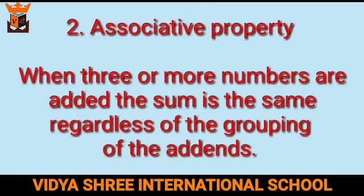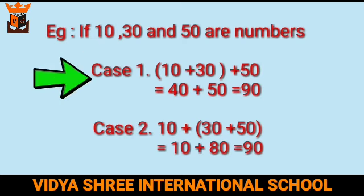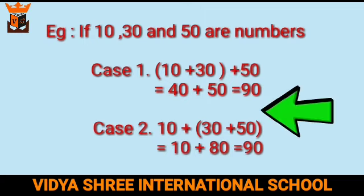The second is the associative property: when three or more numbers are added, the sum is the same regardless of the grouping of the addends. Take the numbers 10, 30, and 50. In the first case, group 10 and 30 together and add that sum to 50. In the second case, group 30 and 50 together and add that sum to 10. In both cases the sum is 90, so the sum of three numbers always remains the same.